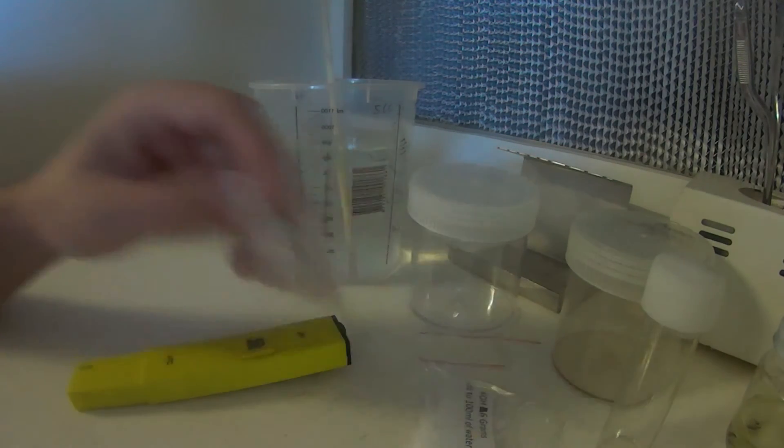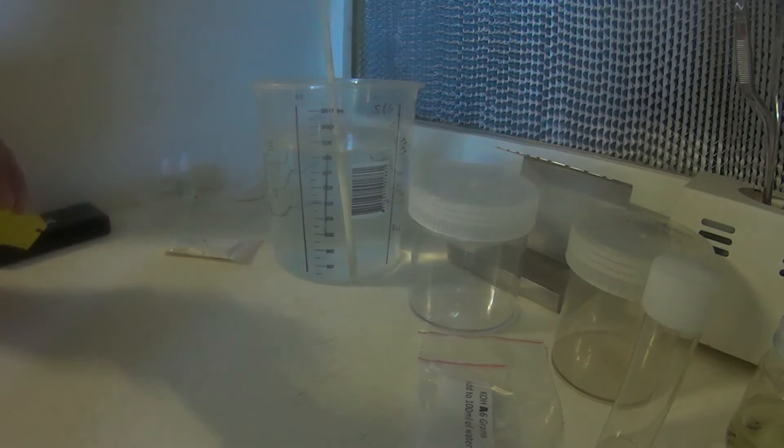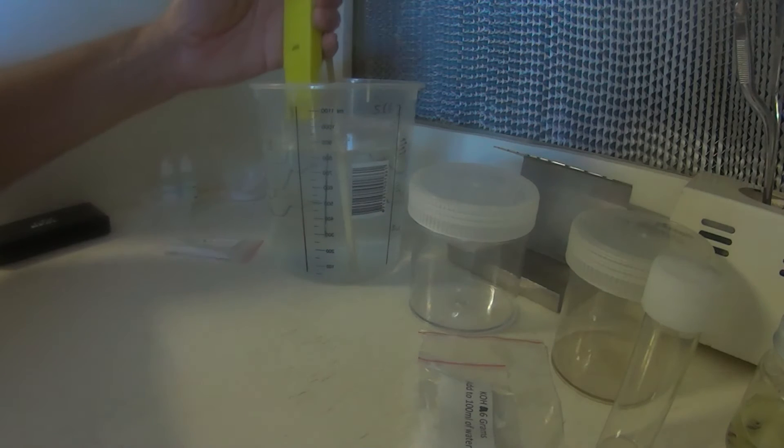Now before we add the Gelrite, I'm just going to test the pH, just to get it up to around five and a half. I don't necessarily have to, but I like to get it around there before I add the Gelrite to the media, just seems to mix in a little bit better if the pH is a little bit closer to the mark.